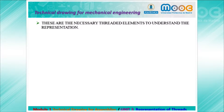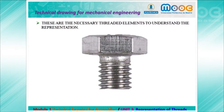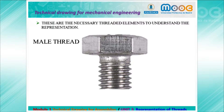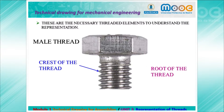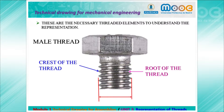These are the necessary elements to understand the representation. We have here the male thread, we have the crest of the thread, we have the root of the thread, and we also have the nominal diameter.